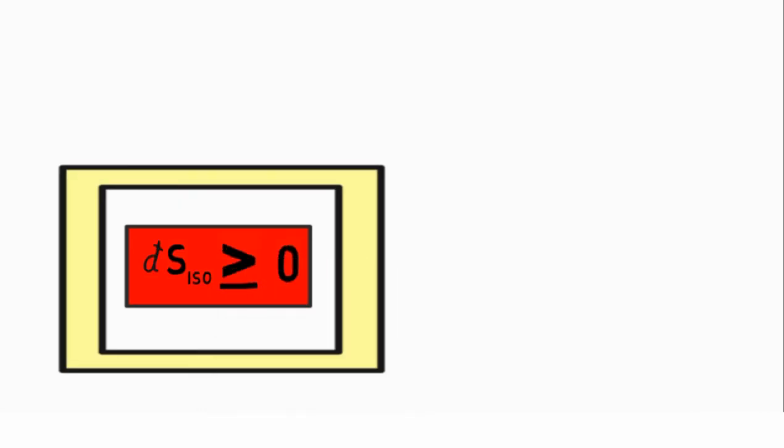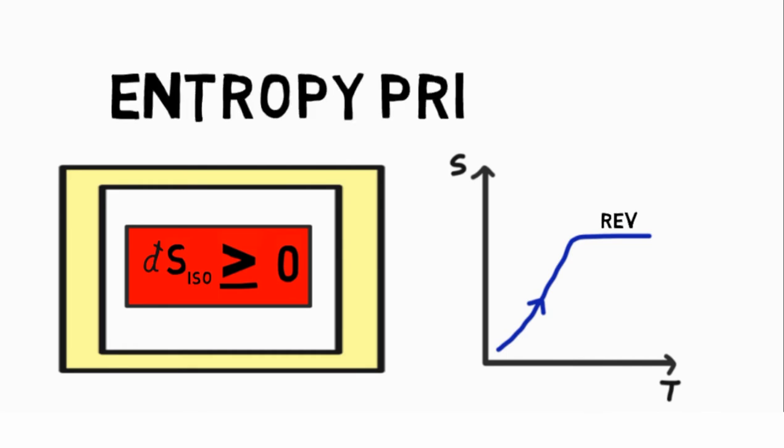The entropy of an isolated system can never decrease. It always increases and remains constant only when the process is reversible. This is known as the entropy principle.